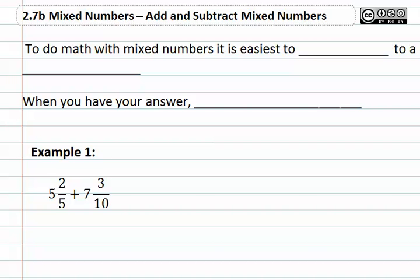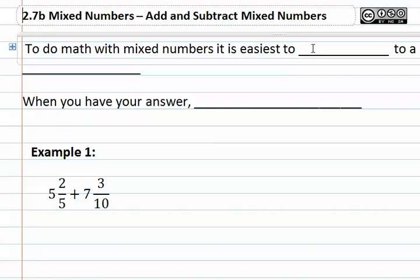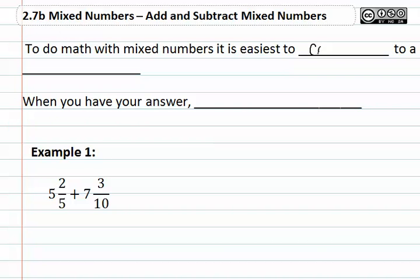2.7b, Mixed Numbers - Add and Subtract Mixed Numbers. To do math with mixed numbers, it is easiest to convert to a fraction. And then, when you have your answer, you need to remember to convert it back.